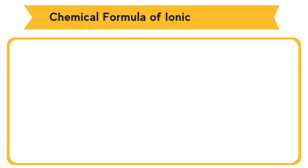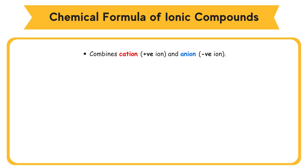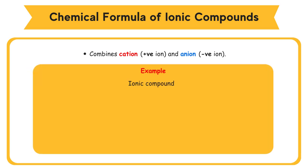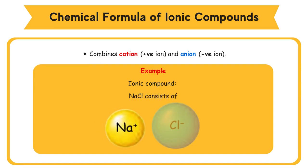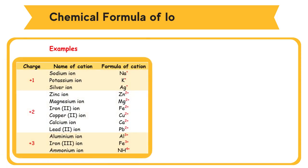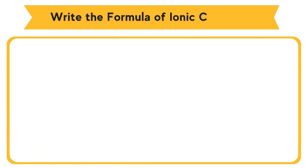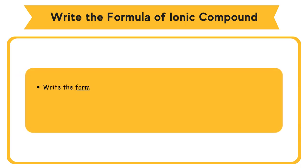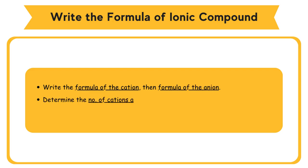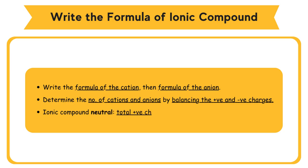Chemical formula of ionic compounds. The formula of an ionic compound combines the formula of its cation (positive ion) and the formula of its anion (negative ion). For example, ionic compound NaCl consists of Na⁺ cation and Cl⁻ anion. To write the formula of an ionic compound: write the formula of the cation followed by the formula of the anion, then determine the number of cations and anions by balancing the positive and negative charges. The formula of an ionic compound is neutral because the total positive charges equal the total negative charges.